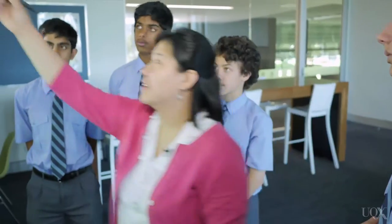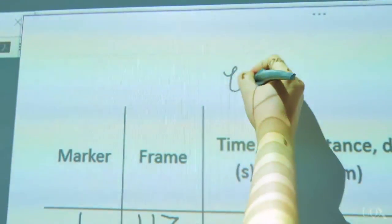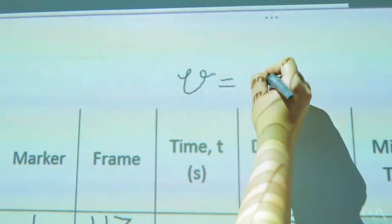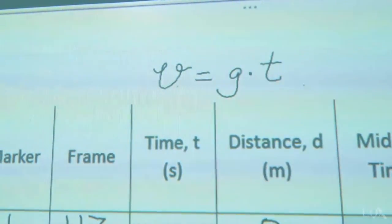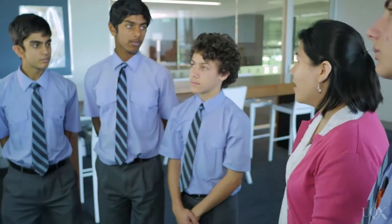So first of all we're going to analyze our video to get the data that we want from it. We're going to use the equation v equals g times t. Now you've seen this equation before — what do you think v might be? Velocity. Excellent, but because we've got the object falling straight down we will use the term speed, so we don't need the direction.